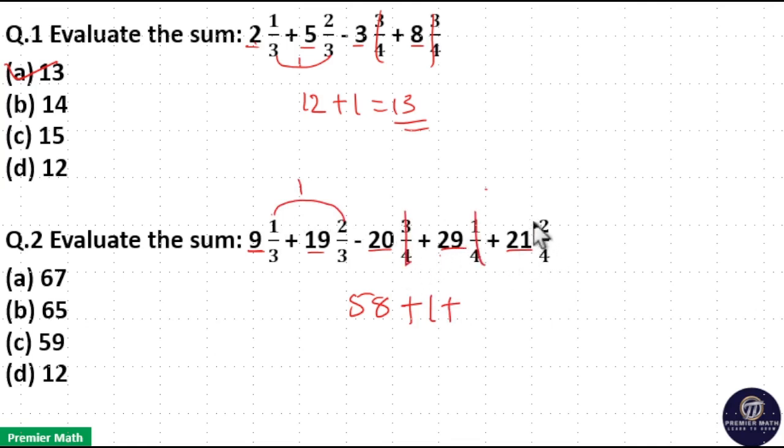So 3 by 4 and minus 3 by 4 cancel. This is minus 3 by 4. So here your answer is equal to 59. Option C is your answer.